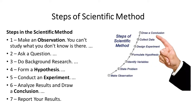There are various steps of the scientific method. The first step is observation, then you ask a question, do background research, form a hypothesis, conduct an experiment, analyze results, and draw a conclusion. Finally, make a report of the results. These are the seven steps of the scientific method.